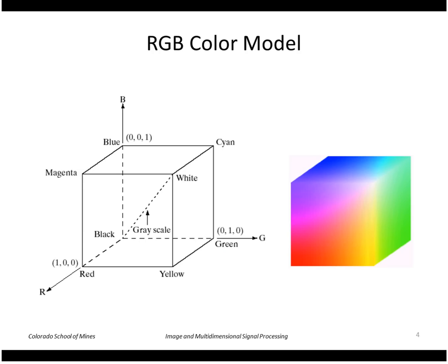A useful way to represent color values is with a color cube, where we have three axes — one for red, one for green, one for blue — each ranging from zero to one. So each color value is a point within this cube, and this image shows the colors along the surfaces of this cube.